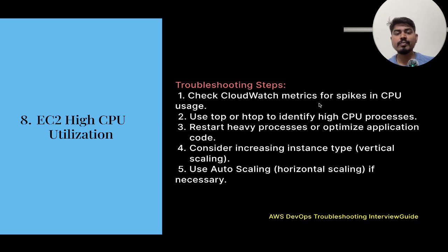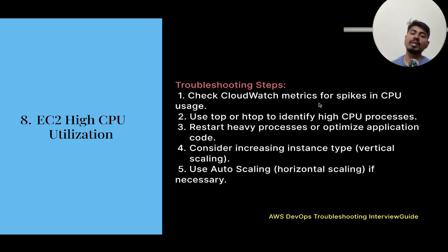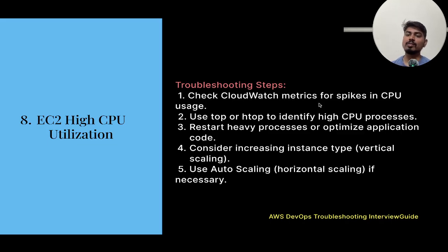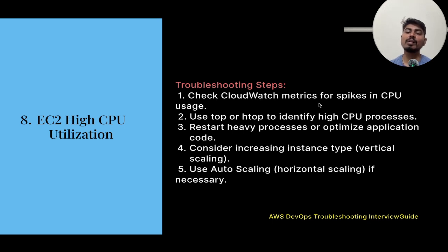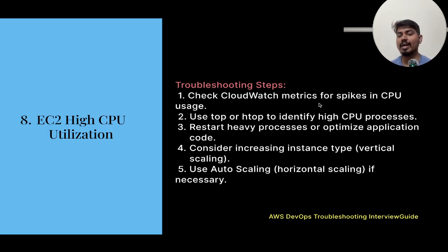Consider increasing the instance type. We can scale in two ways: vertical scaling — changing the instance type to one with more CPU cores — or horizontal scaling. If possible, use an Auto Scaling group and add instances horizontally so the application is highly available.